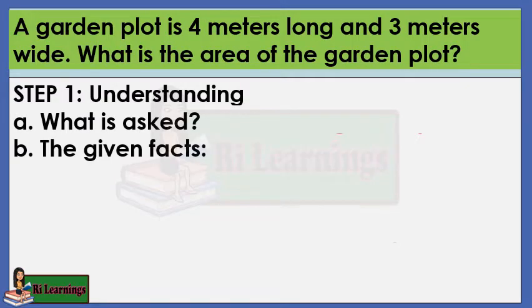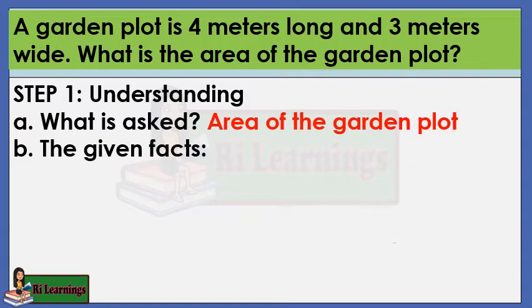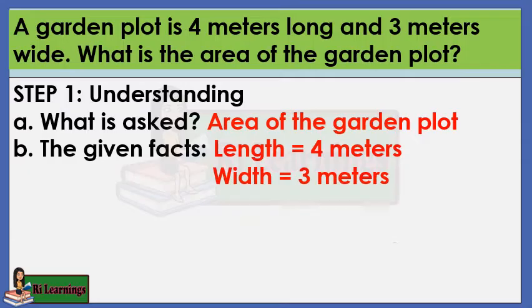Step 1: Understanding. What is asked: Area of the garden plot. Given facts: Length equals 4 meters, width equals 3 meters.